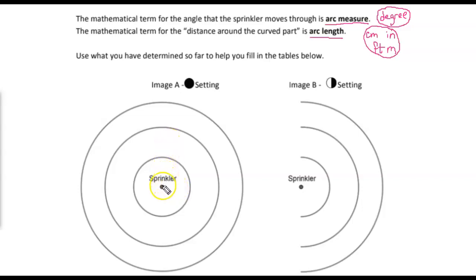And we want to compare what's going on with those sprinklers. And so if I go all the way around 360 degrees, we generally don't refer to that as an arc. We actually refer to that as the circle itself or if we're looking for its length, circumference.